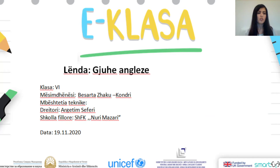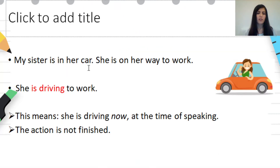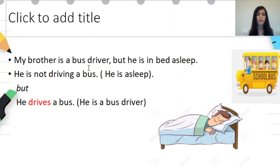Let's have a look at these two situations. The first situation: my sister is in her car. She's on her way to work. She's driving to work. This means that she's driving now, at the time of speaking. The action is not finished yet. The second situation: my brother is a bus driver but he's in bed asleep. He's not driving a bus — he's asleep, but he drives a bus. He's a bus driver. In this case we are not talking about something that is happening at the moment of speaking, but it is a fact that he's a bus driver because he drives a bus.